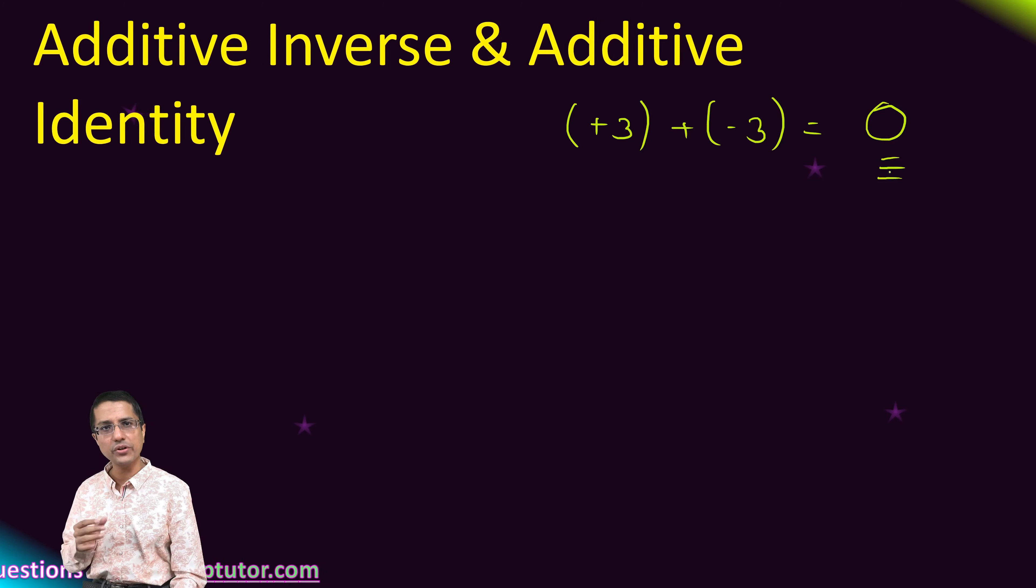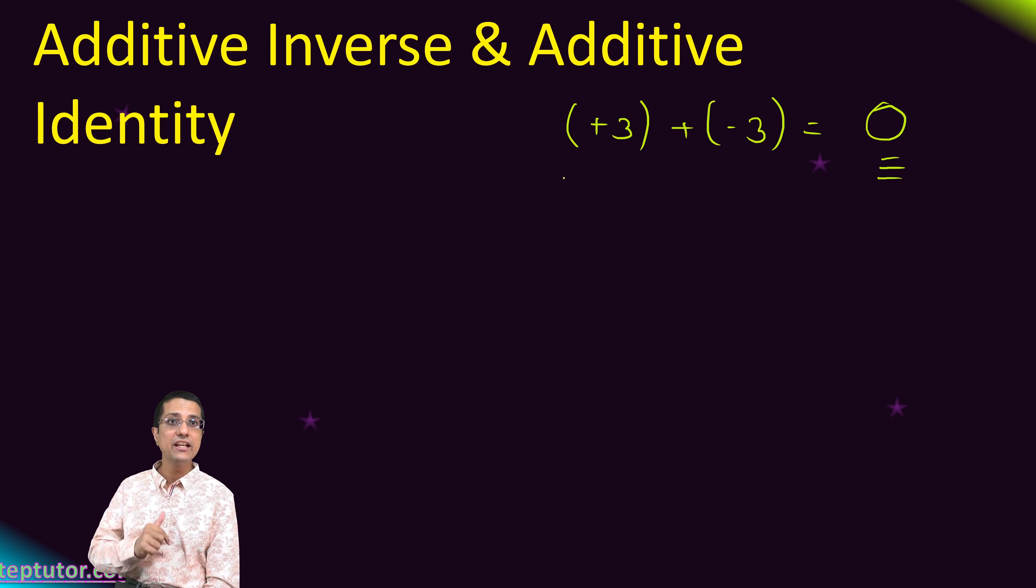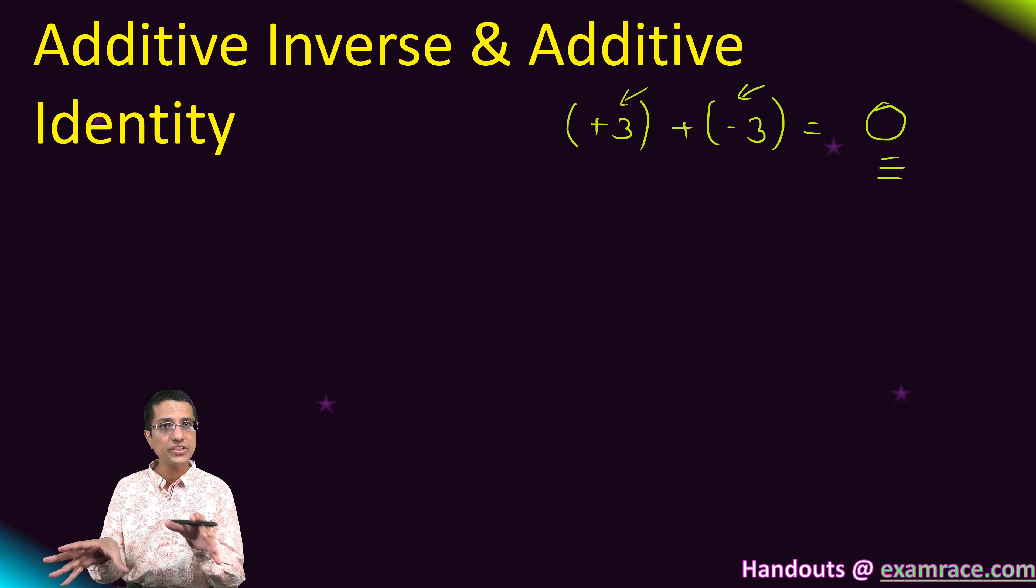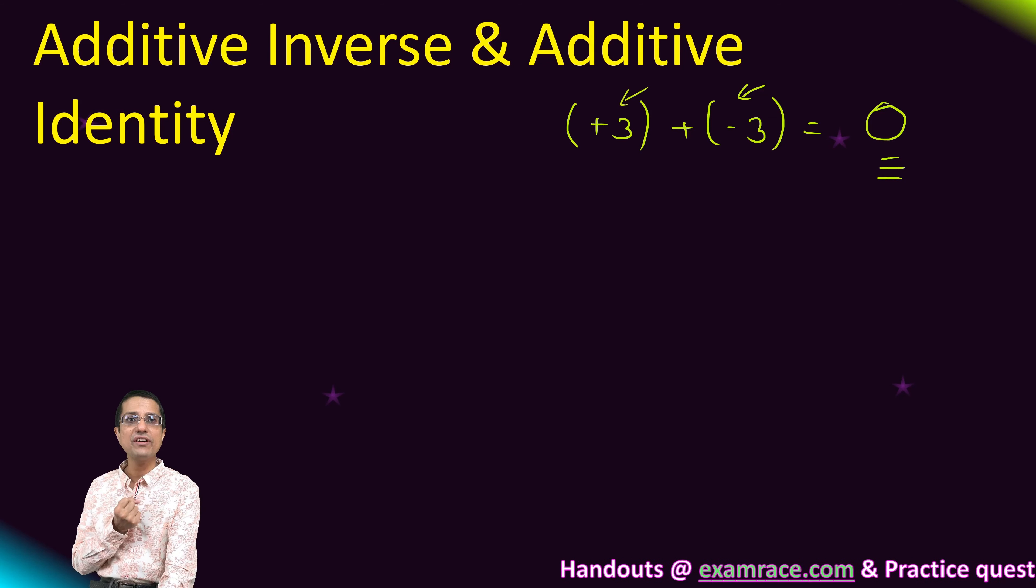So that is the most important thing. We have already understood additive identity with whole numbers. So if I add two numbers which are additive inverse of each other, then I get back the additive identity.